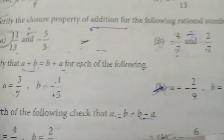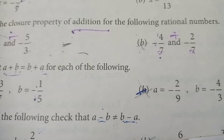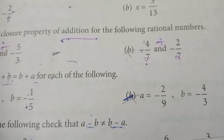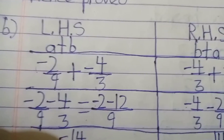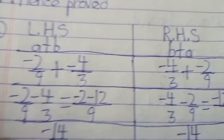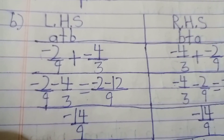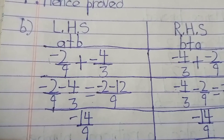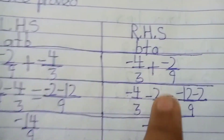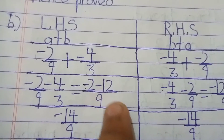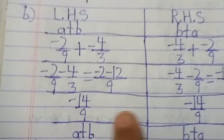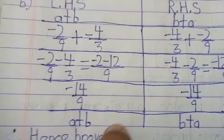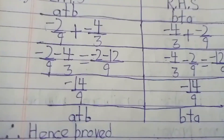Part (b): a = -2/9, b = -4/3. LHS = -2/9 + (-4/3). RHS = -4/3 + (-2/9). Simplifying LHS: (-2 - 12)/9 = -14/9. Simplifying RHS: (-12 - 2)/9 = -14/9. So a + b = b + a. Hence proved.